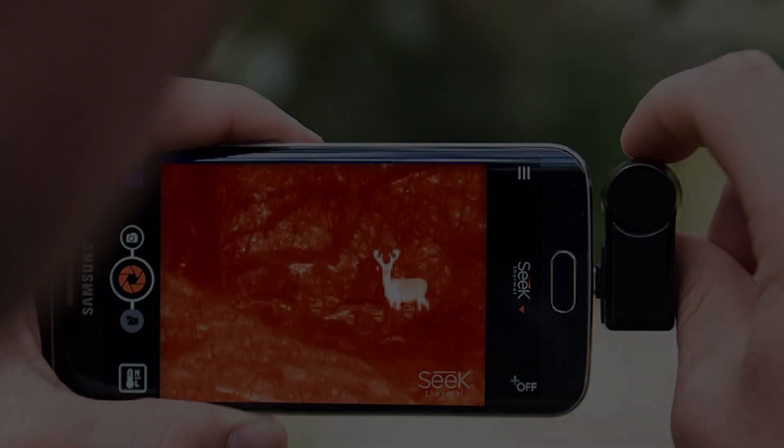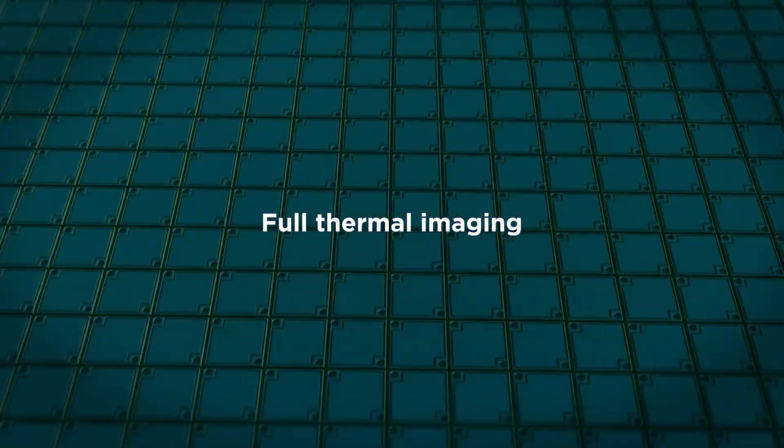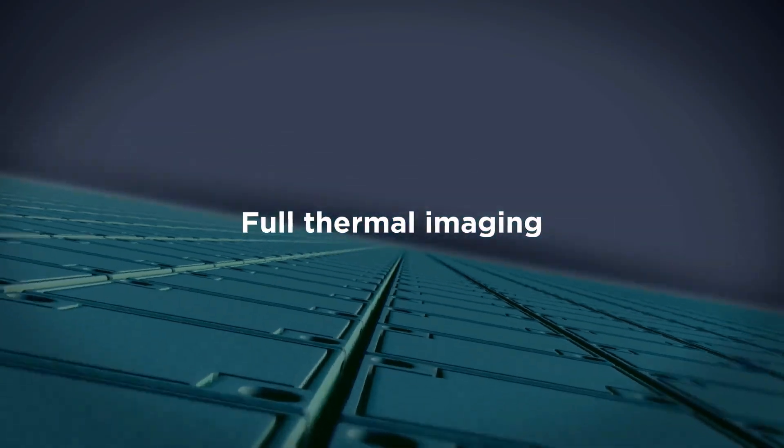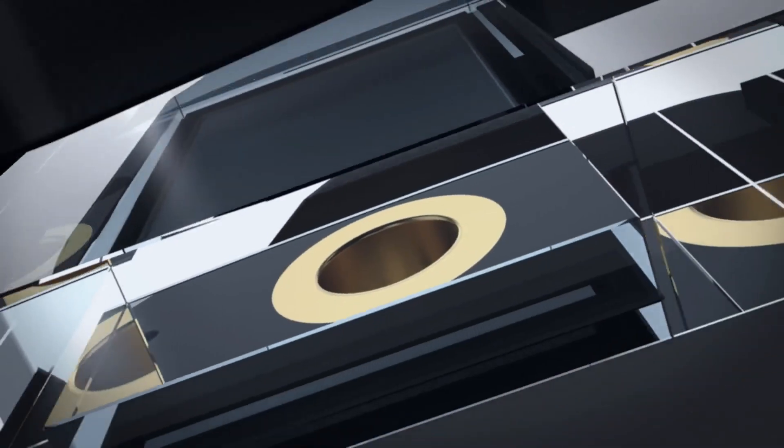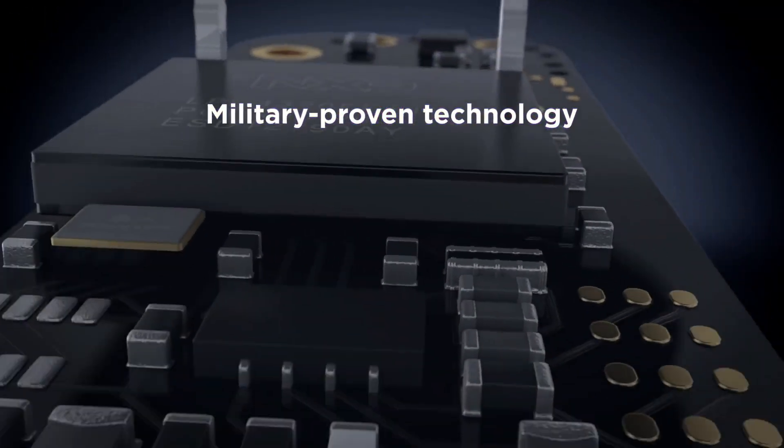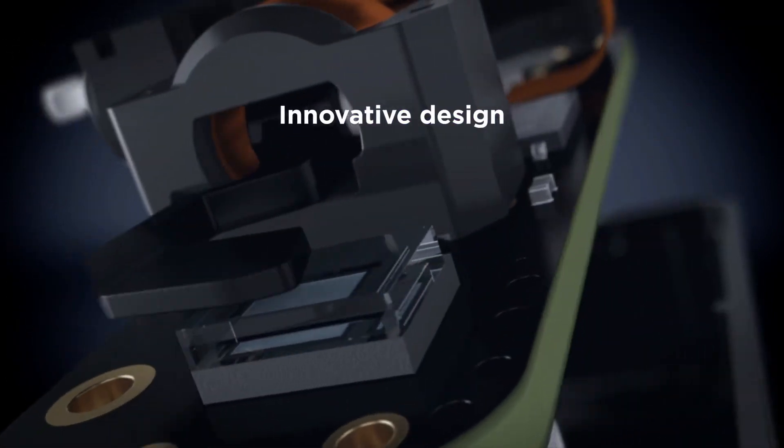Temperature range: Compact XR can detect temperatures from minus 40°F to 626°F with an 1,800 foot range. Android compatibility: Like the Compact Pro, this camera uses micro USB or USB-C depending on what you need and is compatible with most Android devices running Android 4.3 or higher OS.